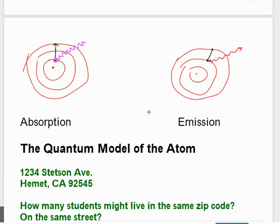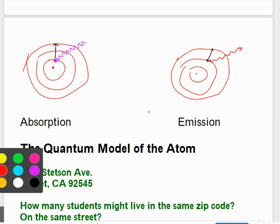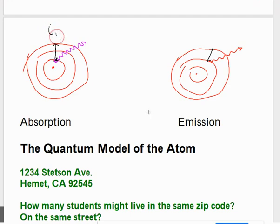Absorption, the light comes in and the electron goes up from energy level 1 to energy level 3 or something higher. It goes up in energy. And if it goes down, for example 3 down to 2, then that is emission. It's giving off energy.